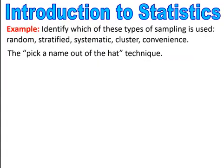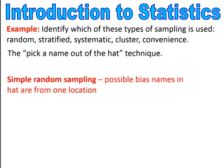Let's do some examples to identify which type of sampling was used. First: picking a name out of a hat. This is simple random sampling because anyone could be picked. With any type of sampling, there's always possible bias — a problem in the way things are being done. The possible bias here is that the names in the hat might all be from one location.